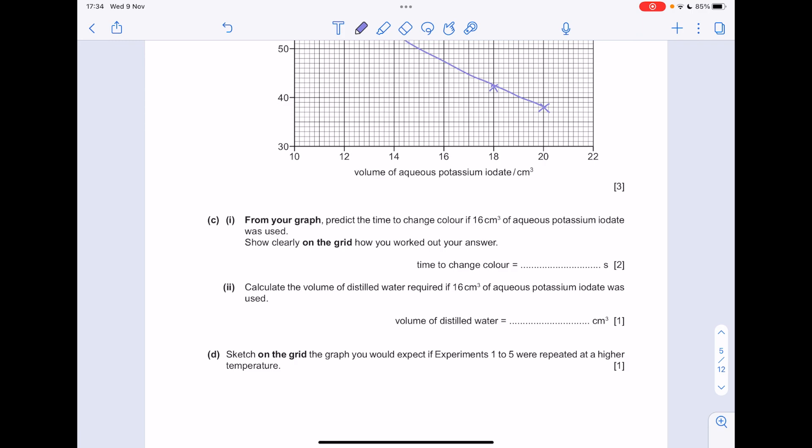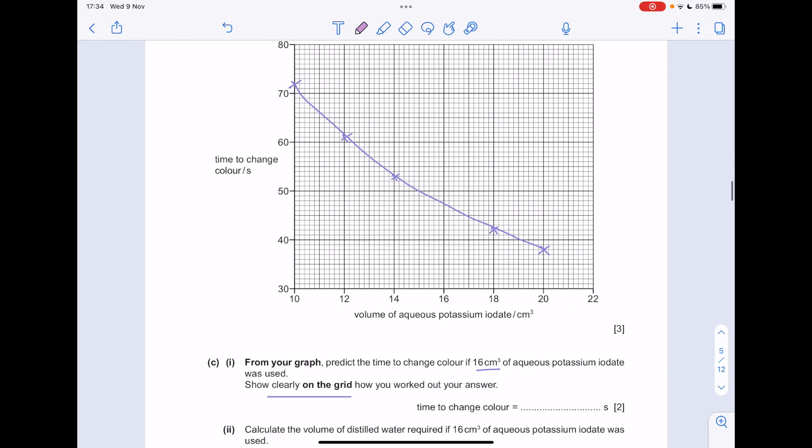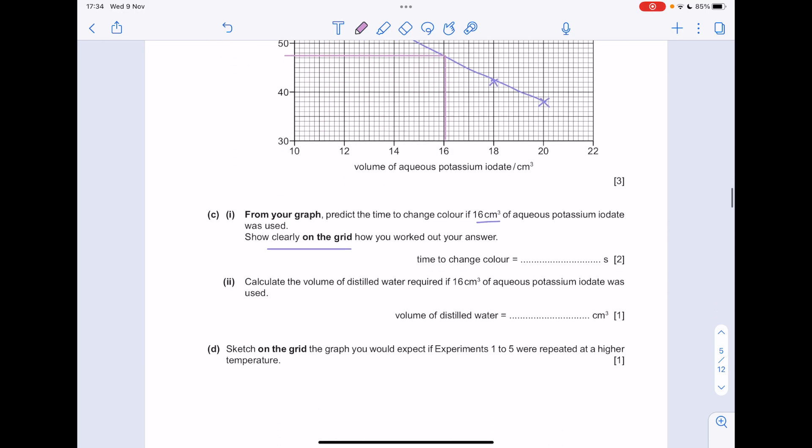From the graph, predict the time to change colour if 16 centimetres cubed of potassium iodate was used to show clearly on the grid how you worked out your answer. So we draw a line up here at 16 centimetres cubed and then we read across to that y axis to get a value of around 47 and a half. I'm going to say 47.